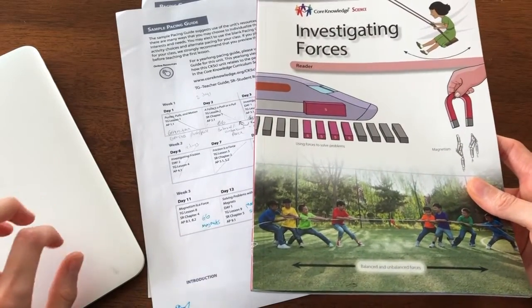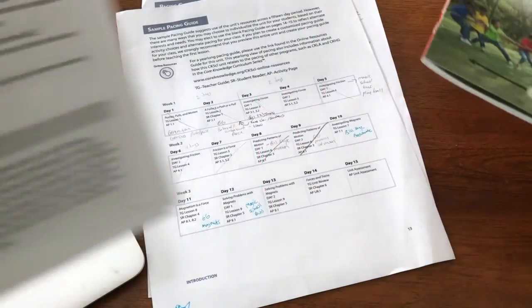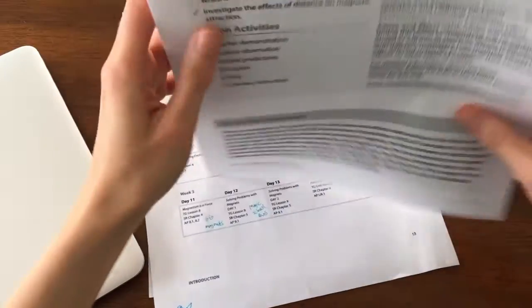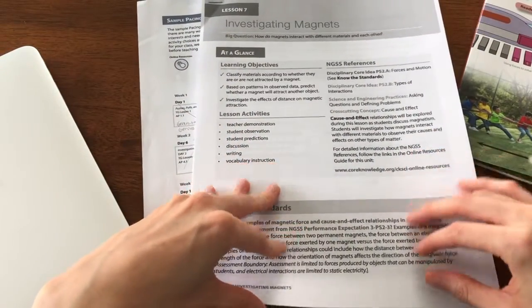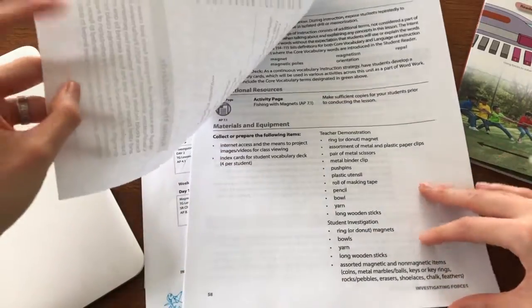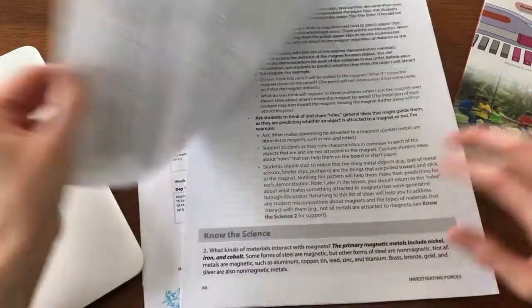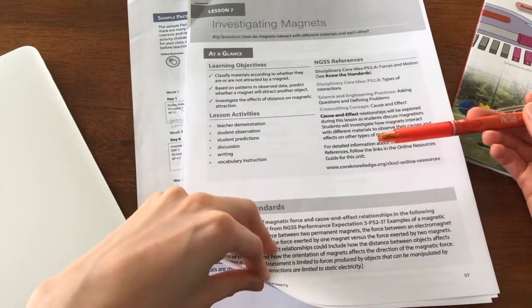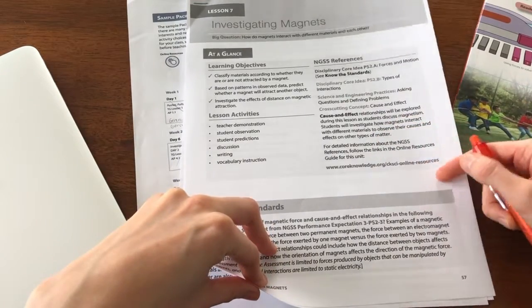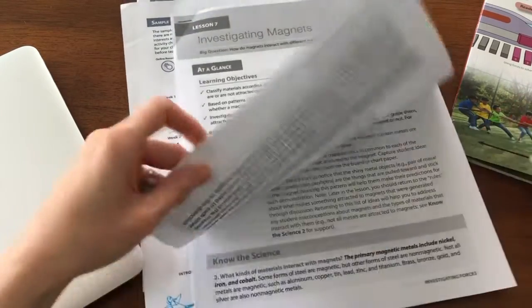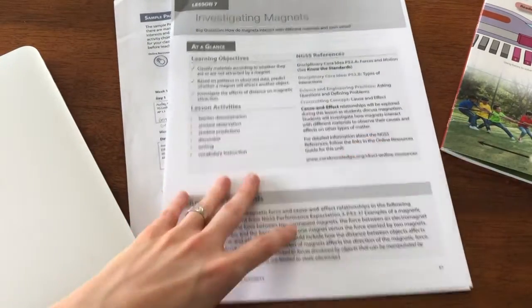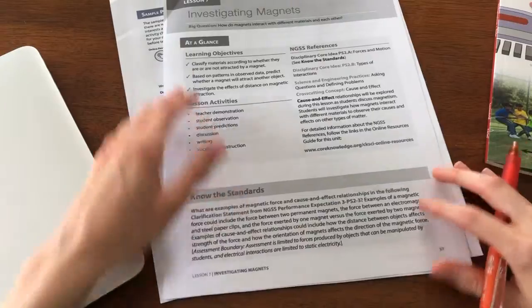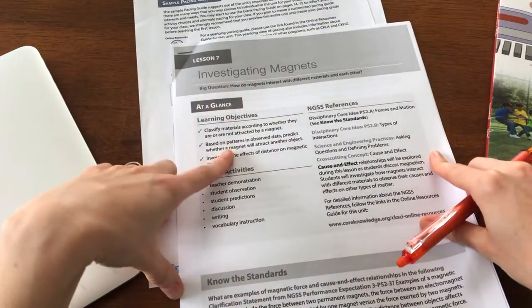But I do look at the teacher guides online. I actually print out the science ones. And I do that because there's a lot of discussion questions that go with the unit and demonstrations. And it's just easier for me to have a physical copy that I can mark up. I know a lot of people use the Notability app with Core Knowledge. I prefer pen and paper and real physical things I can touch. That's just how I work.